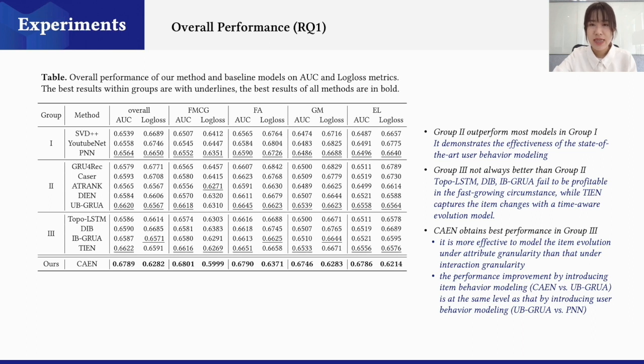Furthermore, CAEN obtains even better performance, which is the best among all the item behavior modeling methods. Compared with TIEN, it shows that it is more effective to model the item evolution under attribute granularity than under interaction granularity. And we can also see that the performance improvement by introducing the item behavior modeling is at the same level as that by introducing user behavior modeling.